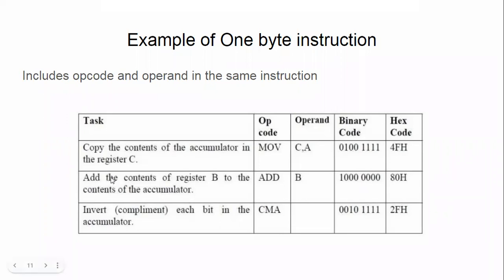ADD B — add the contents of register B to the contents of the accumulator. Even if the accumulator is not given explicitly, it is implied. The result is stored back in the accumulator. The equivalent hex is 80H: 8 = 1000, 0 = 0000. Then CMA — complement A — inverts every bit in the accumulator: 0 becomes 1 and 1 becomes 0. Its equivalent is 2FH.